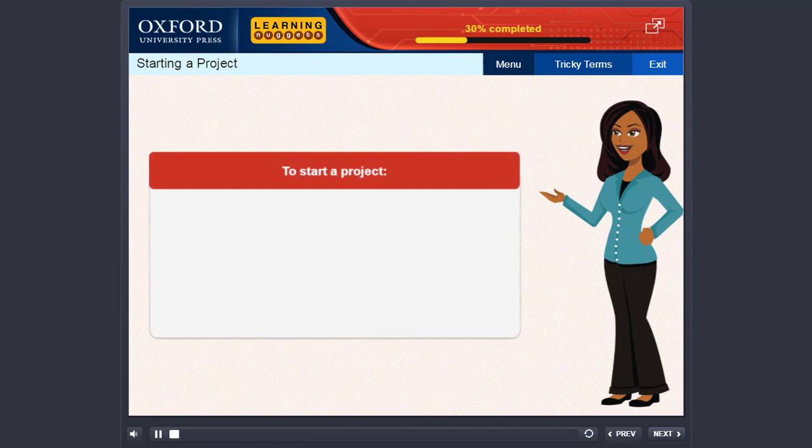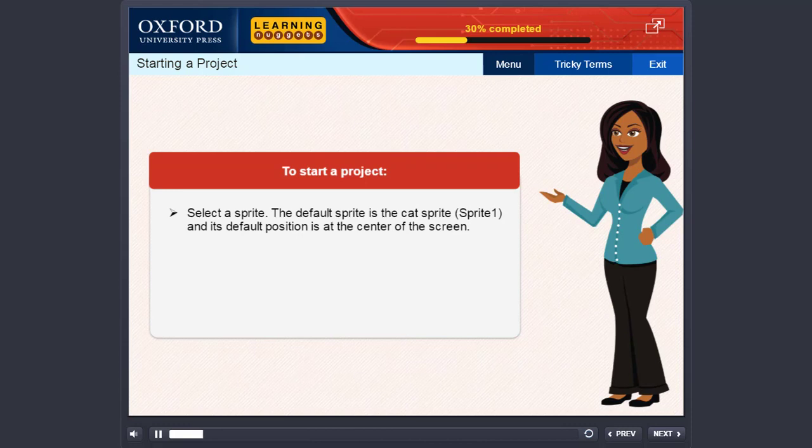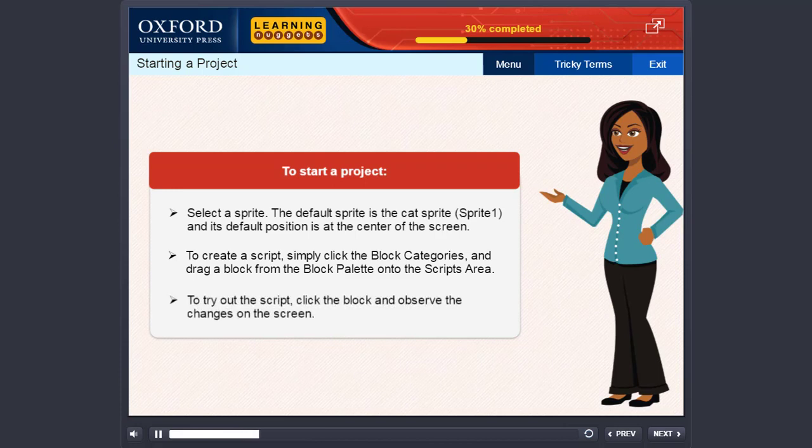To start a project, select a sprite. The default sprite is the cat sprite, and its default position is at the center of the screen. To create a script, simply click the block categories and drag a block from the block palette onto the script's area. To try out the script, click the block and observe the changes on the screen.